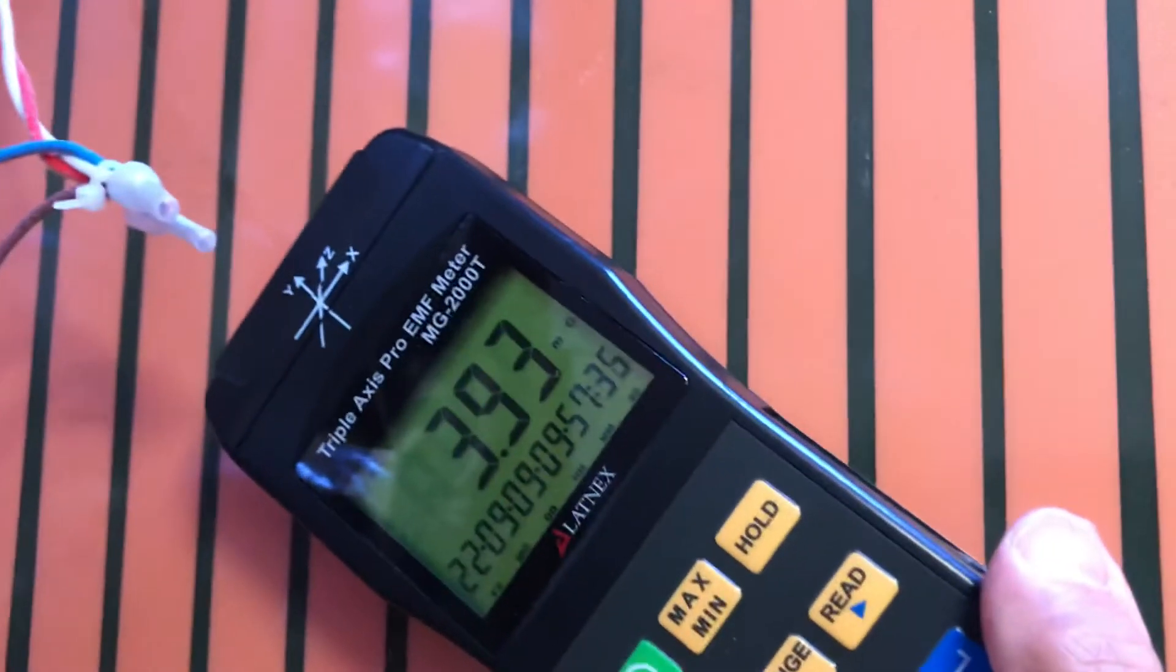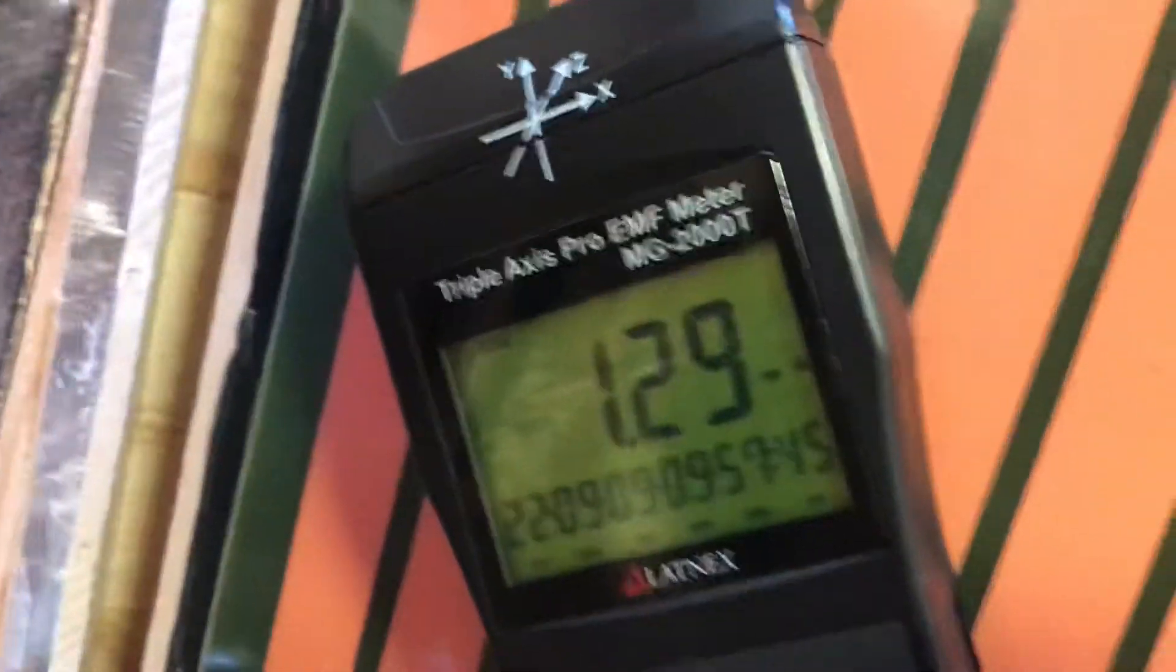So let's look at the back. If we put the meter right on the panel, the EMF is 3. It's zero, it's 0-something, it's 1-point-something.